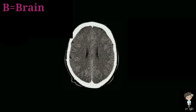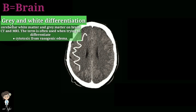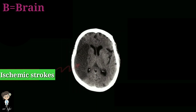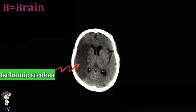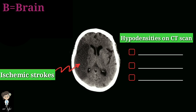The next step is to look for gray and white matter differentiation, which is used when trying to differentiate cytotoxic from vasogenic edema. The earliest sign of cerebrovascular accident is loss of gray-white differentiation. Acute hypoxic brain injury may also be manifested on brain CT as loss of gray-white differentiation. Ischemic strokes can be seen as hypodensities on CT scan. Other things that could be hypodensities include air and gas, fats, and tumors.